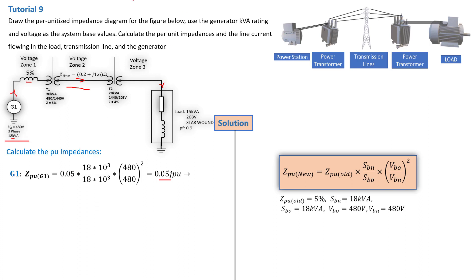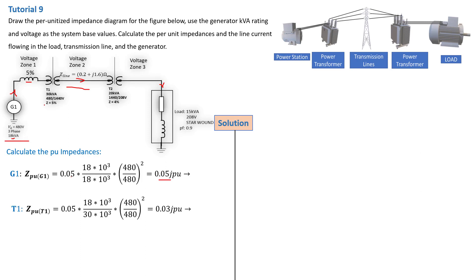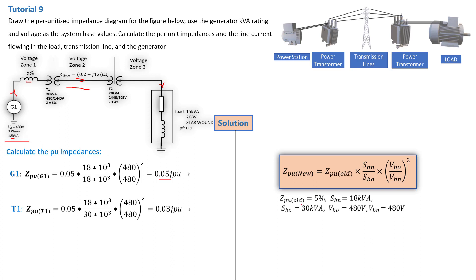Moving on to transformer T1: we apply exactly the same general formula. Z per unit old for T1 is 5%, SB_new is 18 kVA, SB_old is 30 kVA, VB_old is 480 V, and VB_new is 480 V because the new voltage comes from the generator and the primary of the transformer is exactly the same. Substituting these values gives us Z_T1 = 0.03 per unit.